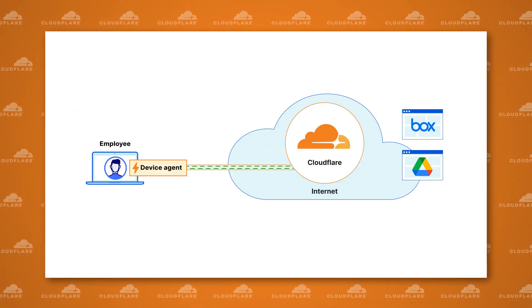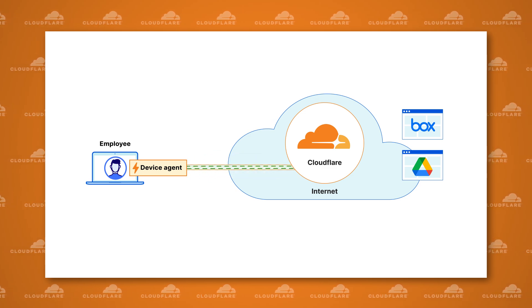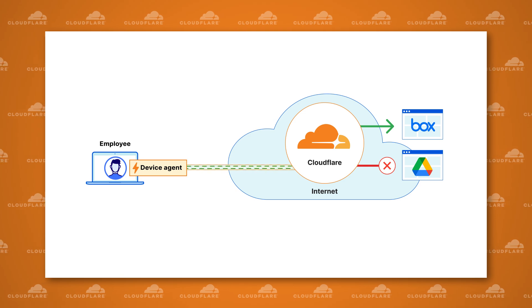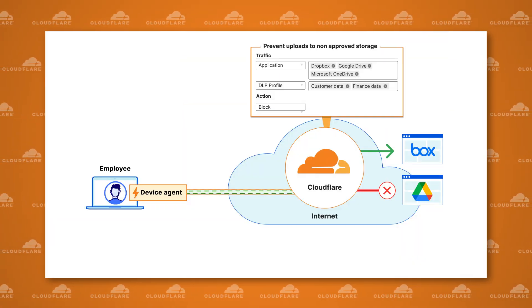You can build policies that limit the uploading or downloading of files based on their file type, or prevent HTTP POST or PUT requests to block certain uploads of content to websites. We also have a sandboxing feature where we can use AV scanning to examine files being downloaded and quarantine them if they contain malicious content. But the true power of inspecting HTTP traffic is when it's combined with our DLP policies.